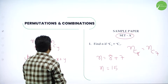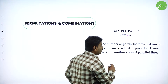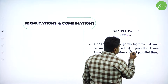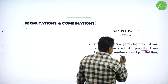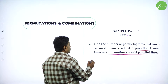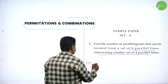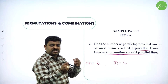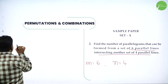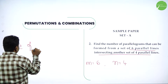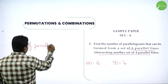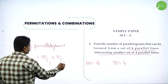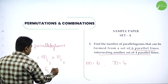One more question you can expect — find the number of parallelograms. This is a two-marker. Find the number of parallelograms that can be formed from a set of six parallel lines intersecting another set of four parallel lines. Let M equal 6 and N equal 4. The number of parallelograms is equal to MC2 into NC2, that is 6C2 into 4C2.